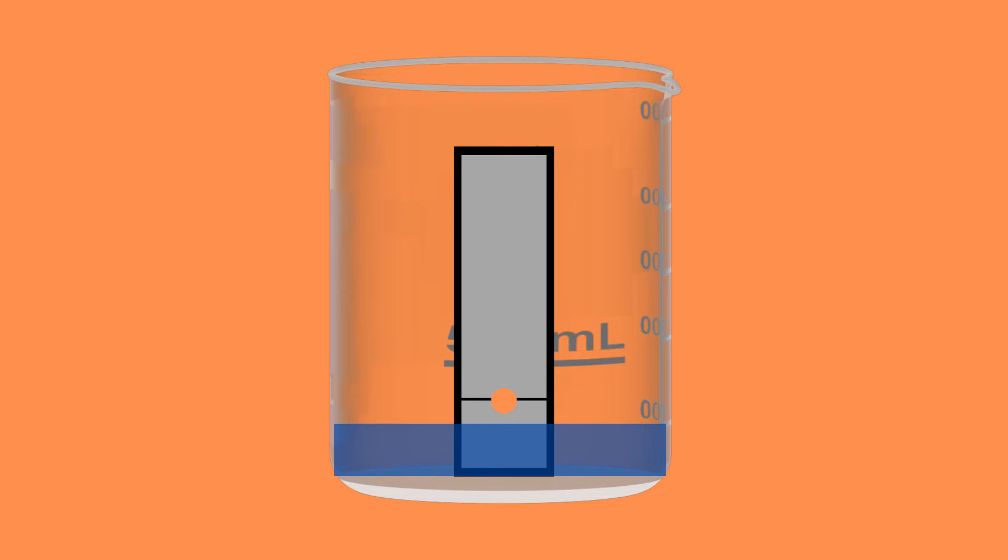The plate is then placed inside a beaker with a small amount of solvent in it. Note that it is very important that the level of solvent is below that of the sample drop. Due to capillary action, the solvent will begin to move up the plate and take the sample with it.